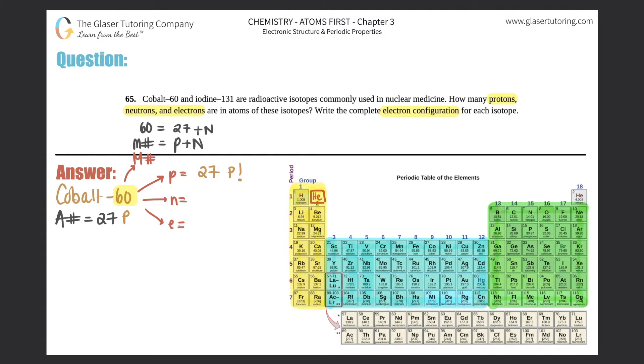just do some simple algebra to find out how many neutrons there were, right? All you got to do is just 60 minus 27. So 60 minus 27 is 33. So now I have 33 neutrons.